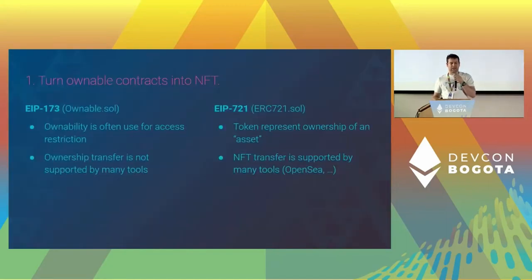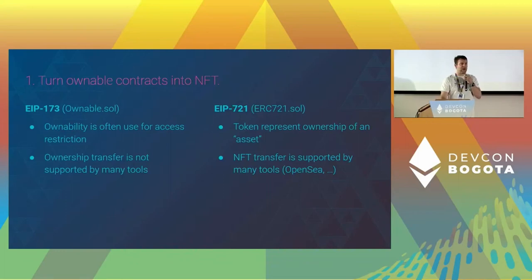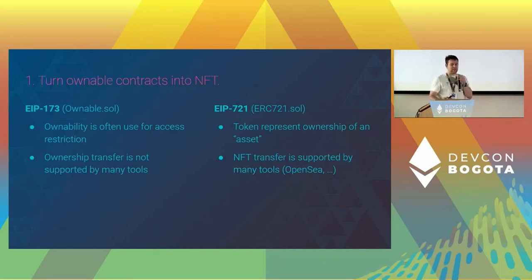An example: people always ask us, can we make an ownable contract payable, like someone could buy it? This makes really no sense because there is already a lot of tooling for buying assets — that's the NFT space. In the NFT space, you can just buy anything from OpenSea or any other marketplace. We don't want to redeploy that for ownable contracts. So the idea is that when ownability is just ownership of a contract to have access to some admin functions, you could just turn that into an ERC-721.